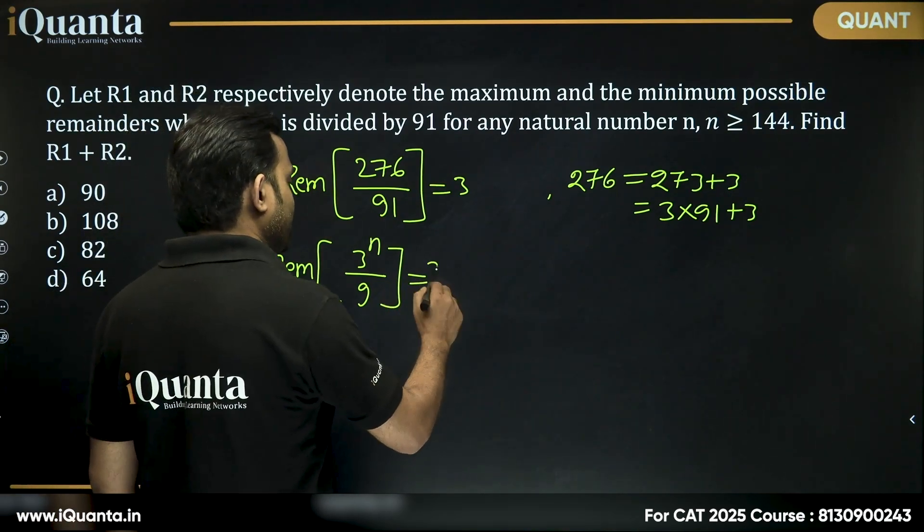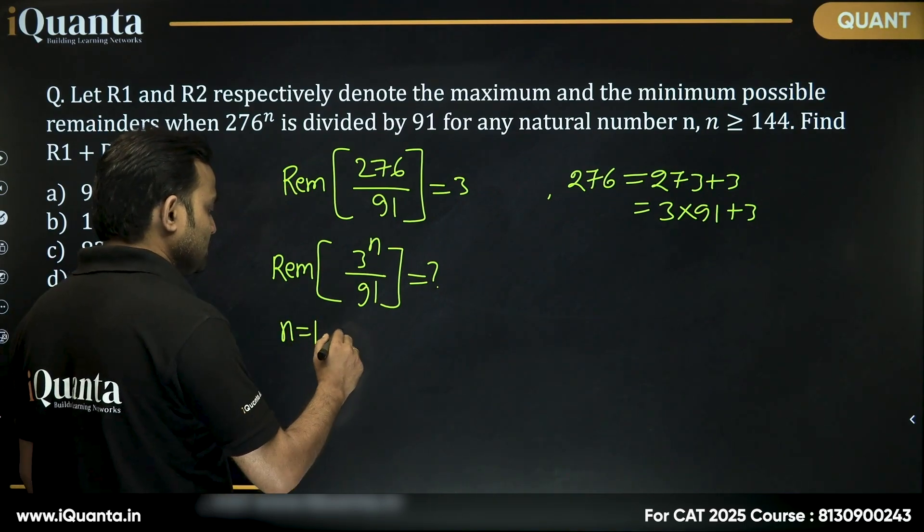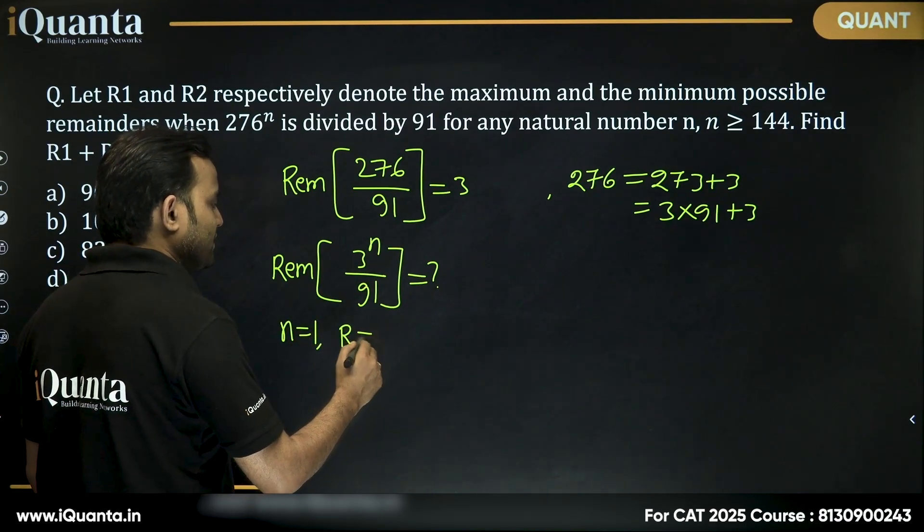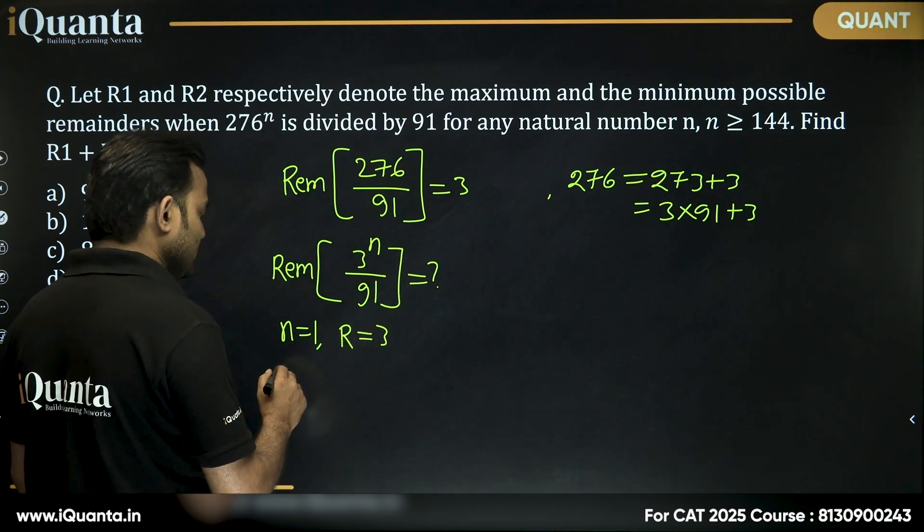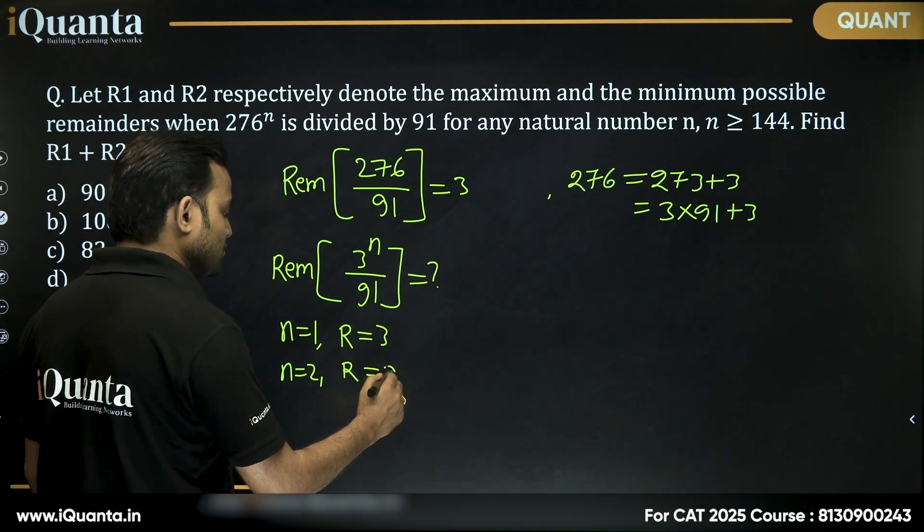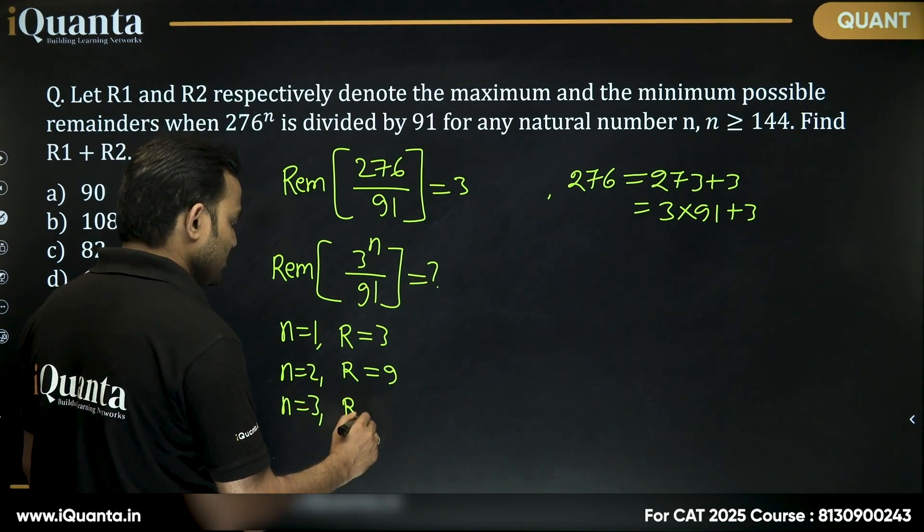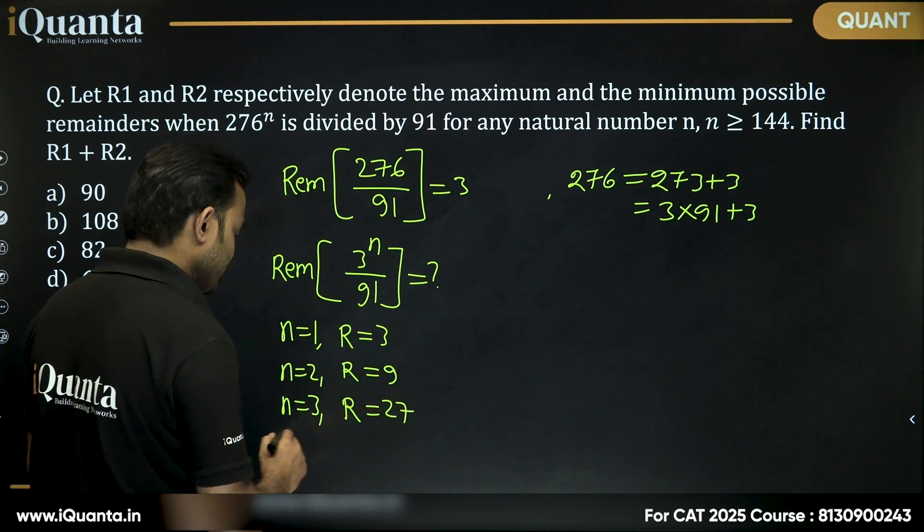Now if we take different values of n, if I take n equals 1, the remainder will be equal to 3. If I take n equals 2, the remainder R will be equal to 9. If I take n equals 3, the remainder R will be equal to 81.